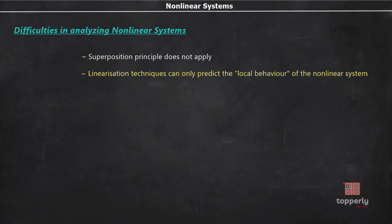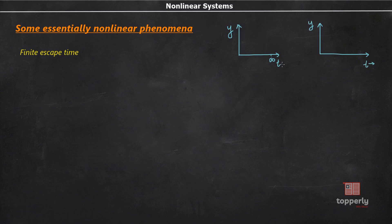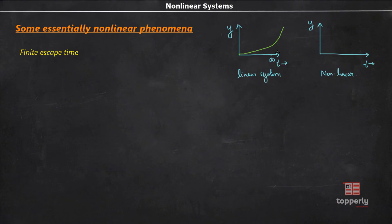The second limitation is that there are certain phenomena which can occur only in non-linear systems and cannot be predicted using a linearized model. The first essentially non-linear phenomenon is finite escape time. To explain this: the state of an unstable linear system goes to infinity only as time t tends to infinity. However, in the case of a non-linear system, the state can go to infinity in finite time — let this be some time t = t1. This phenomenon of a non-linear system is called finite escape time.